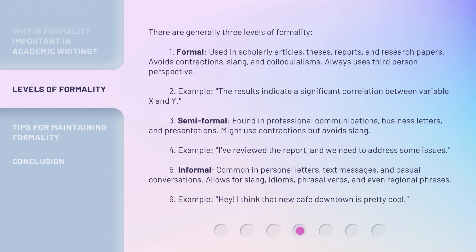There are generally three levels of formality. The first is formal, used in scholarly articles, theses, reports, and research papers. It avoids contractions, slang, and colloquialisms, and always uses third-person perspective. For example: "The results indicate a significant correlation between variable X and Y."